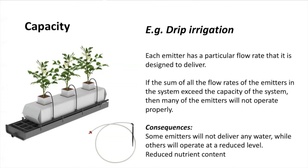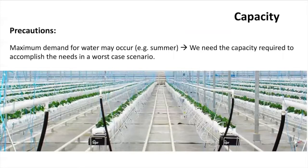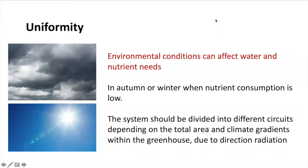In order to have enough capacity, we need to calculate capacity based on the flow of water that must be delivered. We also need to consider that the demand for water can change depending on different factors, and we should always plan to have enough capacity for a worst case scenario. Even inside a greenhouse, water and nutrient delivery can be different. This is why most growers prefer to install a pressure regulator in smaller sections, which will allow the grower to have better control of irrigation.